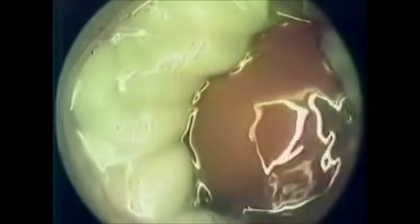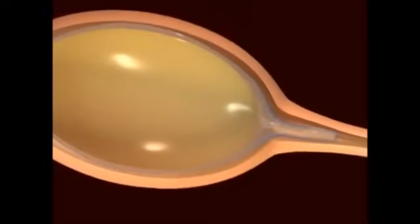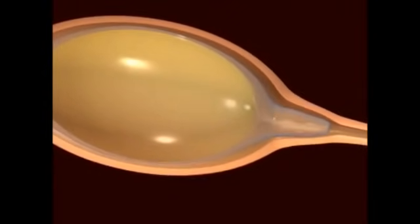The yolk spends about 15 minutes in the infundibulum before it passes into the magnum. In the magnum, over a period of about three hours, it will be covered by a dense, shock-absorbing layer of albumin, or egg white.